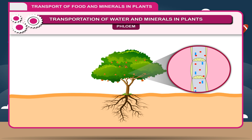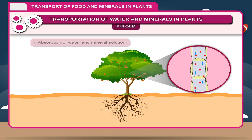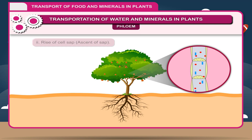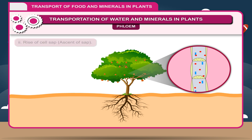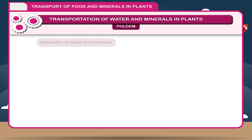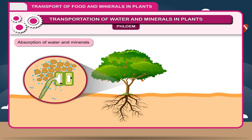The movement of food substances from the region of synthesis to the region of utilization is called translocation. Thus, during transportation, three processes are involved: 1. Absorption of water and mineral solution, 2. Rise of cell sap — Ascent of sap, and 3. Translocation of food material.